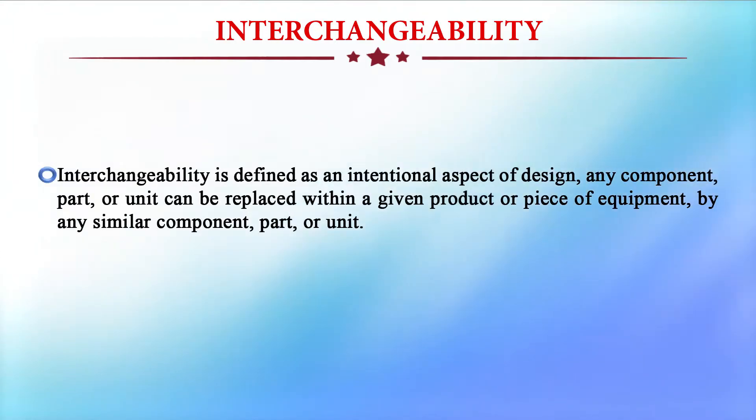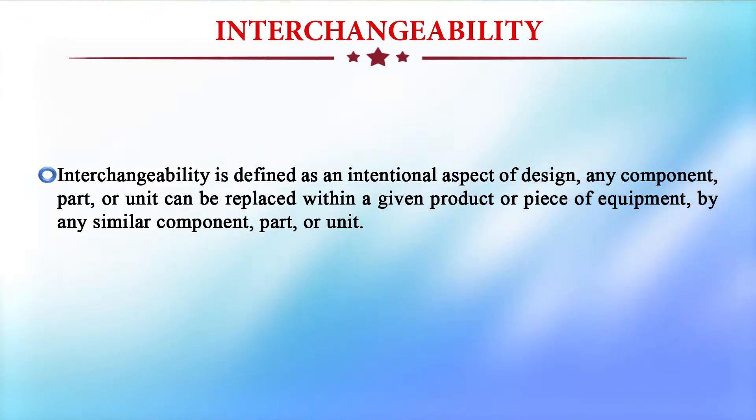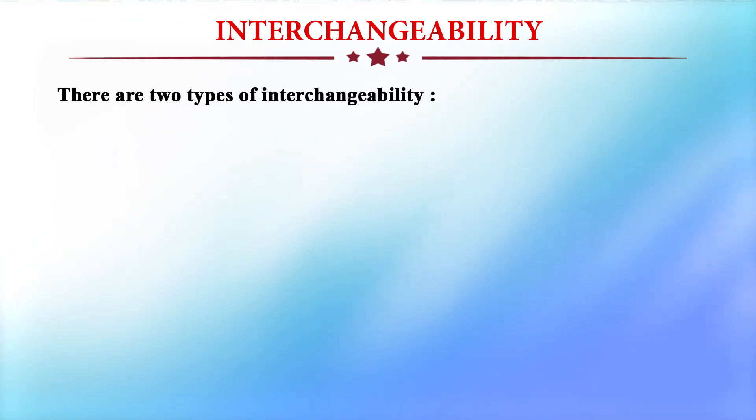Interchangeability of various parts means that one part produced can be interchanged for another part in any number of machines. For example, most computer cords used to connect a computer and hard disk use common standard cords. Interchangeability is defined as an important aspect of design where any component, part, or unit can be replaced within a given product or piece of equipment by any similar component, part, or unit.